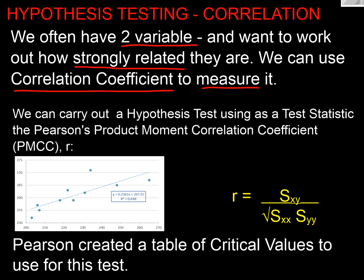Is this correlation just by chance? How extreme is it? We're going to use hypothesis testing for this, and our test statistic is going to be our correlation coefficient. Pearson kindly created a table of critical values to use for this test, and we'll go through and see how to use it now.